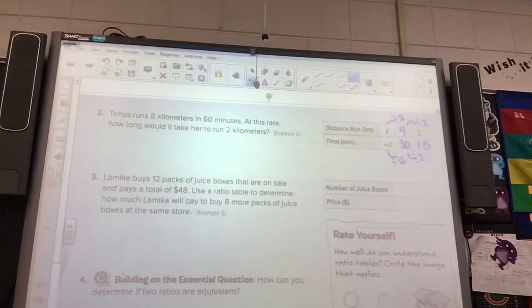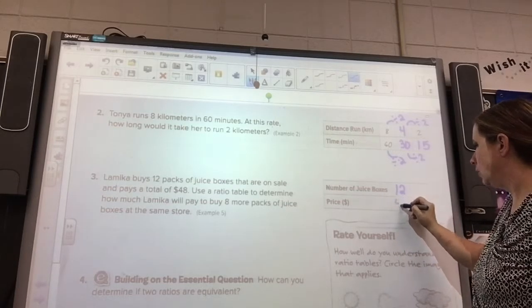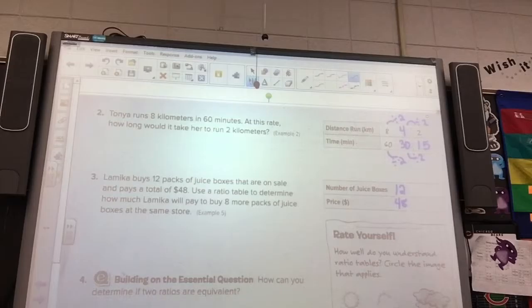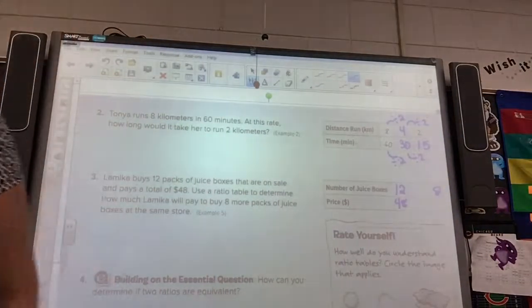All right, number 3 does not give us anything in our boxes we have to figure this out. So, Lameka buys 12 packs of juice boxes that are on sale, and she pays a total of $48. So, 12 packs costs her $48. Determine how much Lameka will pay to buy 8 more packs of juice boxes at the same store. So, we need to put an 8 over here, because that's the number of juice boxes, and now we have to figure out how to get there.